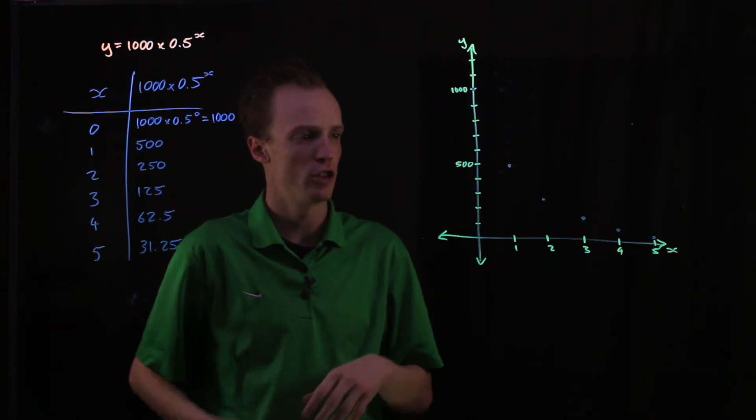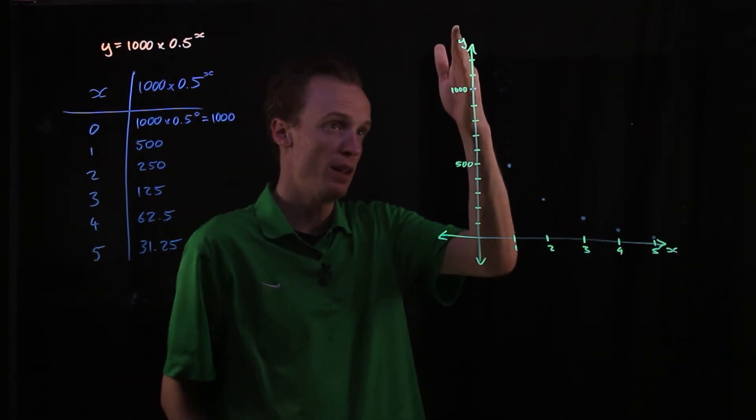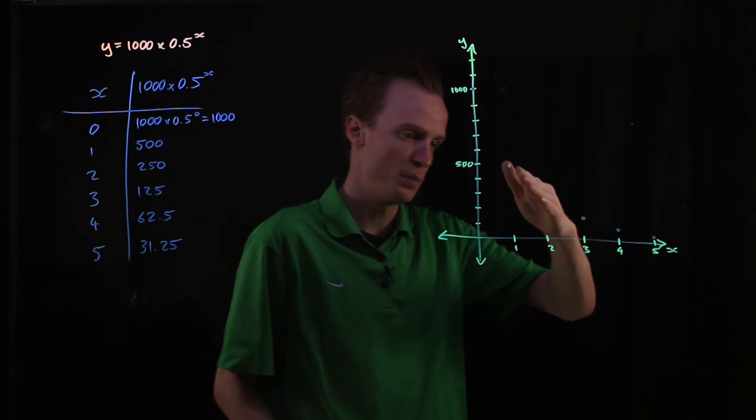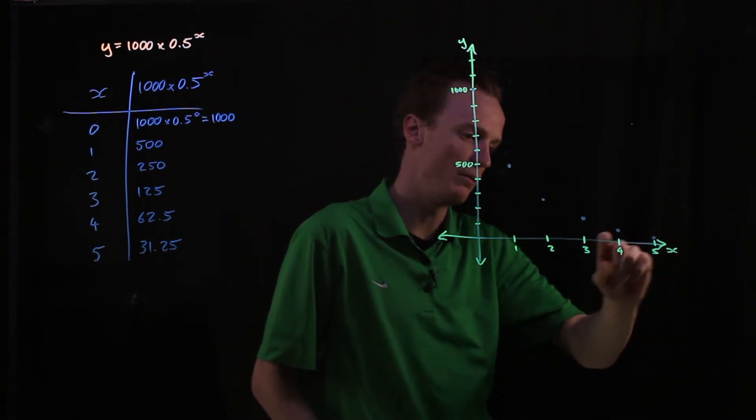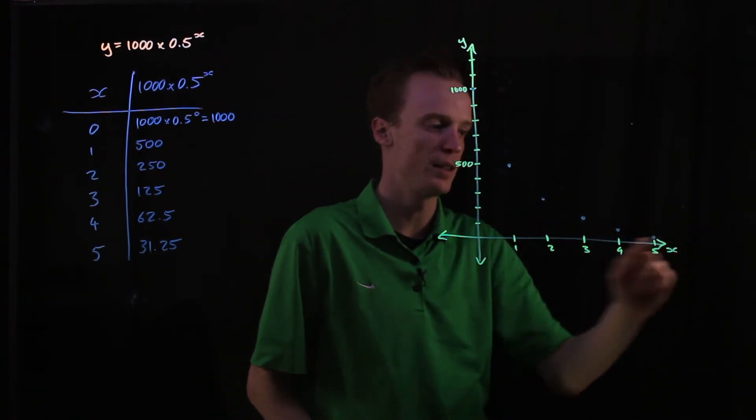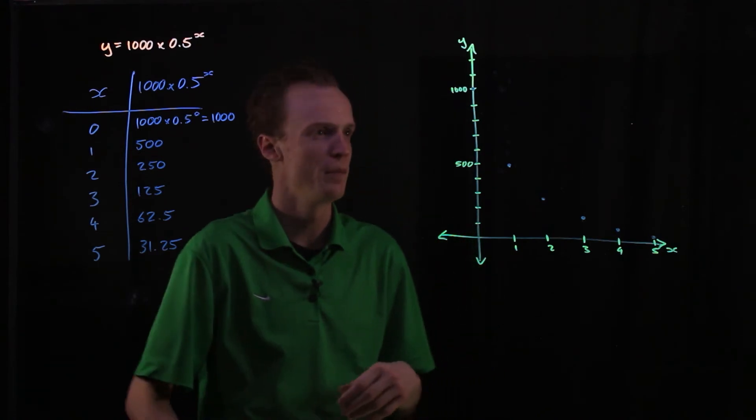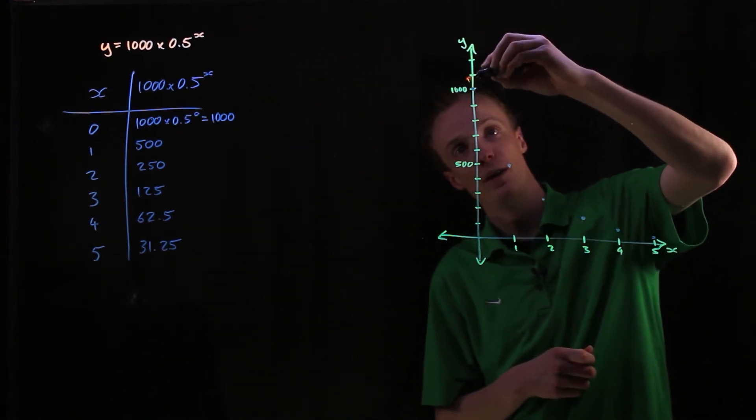So if we're actually looking at the shape of this graph, it seems to be getting smaller and smaller but getting really close to this x axis without actually touching it. So if I was to draw me a line of best fit.